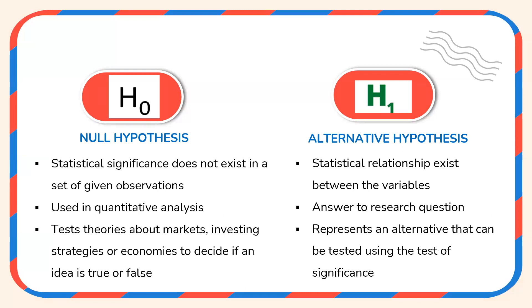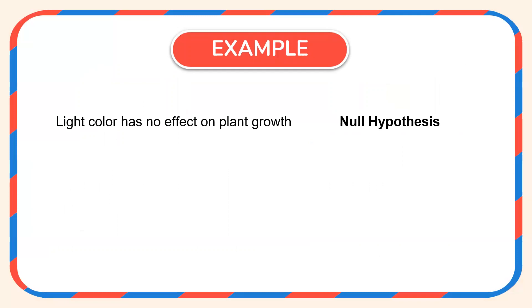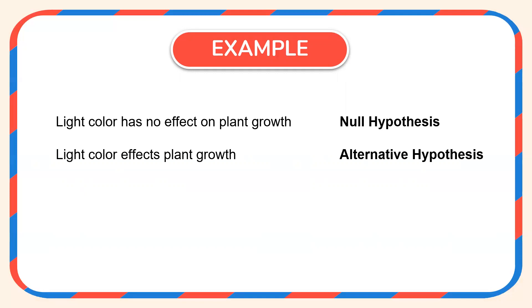The null hypothesis is designed in order to reject the hypothesis. Let us understand null and alternative hypothesis with an example. The null hypothesis is: 'Light color has no effect on plant growth' — there is no statistical significance between the independent variable, light color, and the dependent variable, plant growth. If we want to accept the hypothesis, we design an alternative hypothesis: 'Light color affects plant growth.' When I conduct my investigation, I will find out to what extent it affects plant growth, and that will be my result.